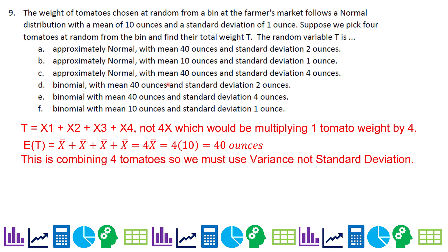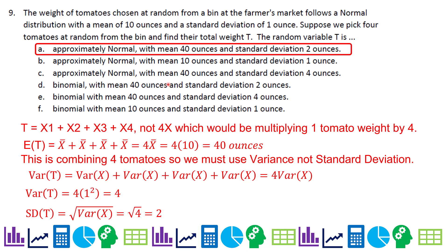Because this is combining four different tomatoes, we must use variance and not standard deviation. So I'm going to write variance of T is variance of X plus the first tomato and the second and the third and the fourth. Since they all have the same variance, we say four times the variance of X or four times. Remember, variance is the standard deviation squared, which in this case, one squared is still one. And you get four. But to get the standard deviation, I have to take the square root of that, which is two. So it's approximately normal with mean 40 ounces and standard deviation of two ounces.